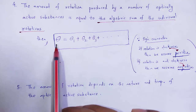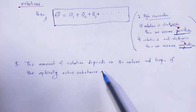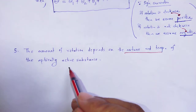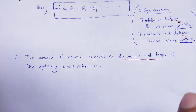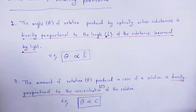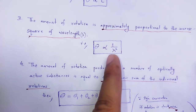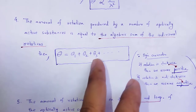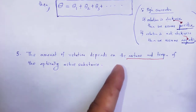In this manner, sign convention is used to add all such optical rotations. The next point is that the amount of rotation depends on the nature and temperature of the optically active substance — what the temperature is also determines what the amount of rotation will be. So these are some laws proposed by Biot regarding rotatory polarization.